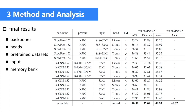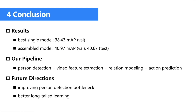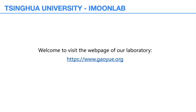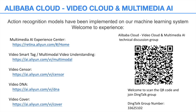We assemble 15 models with average voting and achieve 40.97 MAP on the validation set and 40.67 on the test set, showing less overfitting on validation. In conclusion, we reach higher performance on AVA Kinetics with both single and assembled models. For future directions, we could improve the bottleneck of person detection and take a deeper study on long-tailed learning. The action recognition models have been implemented on our machine learning system — welcome to experience. Please feel free to contact us.